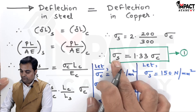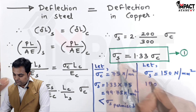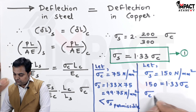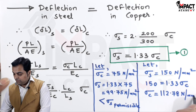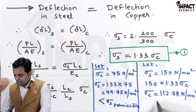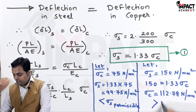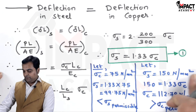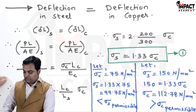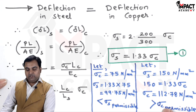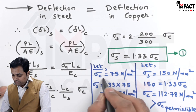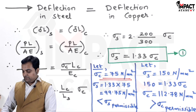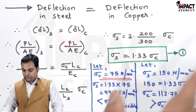Now checking the second condition: if σ_s = 150 N/mm², then σ_c = 150 / 1.33 = 112.7 N/mm². This value of σ_c is way greater than the permissible value of 75 N/mm², so taking σ_s as 150 leads to failure. Therefore, in further calculations we will use σ_c = 75 N/mm² as the governing condition.